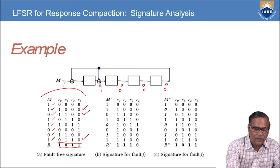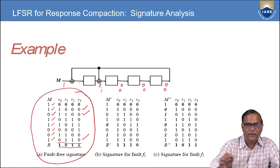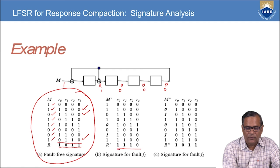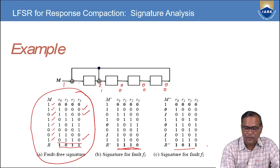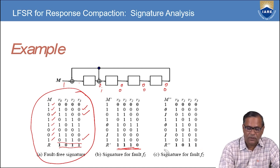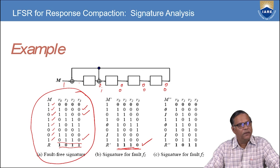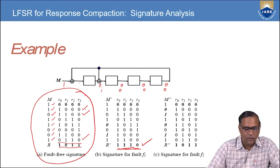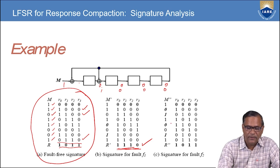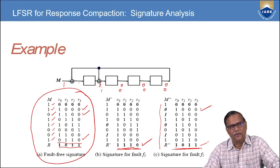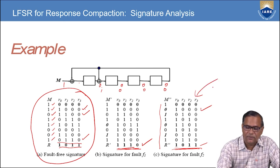This final signature is the output from the correct, fault-free circuit. If there is a fault in the circuit, the signature is going to change, and you can then determine the circuit is faulty. However, there is a case where the input response is faulty but the resulting signature matches the golden signature — this is an example of aliasing, where the faulty circuit escapes detection.